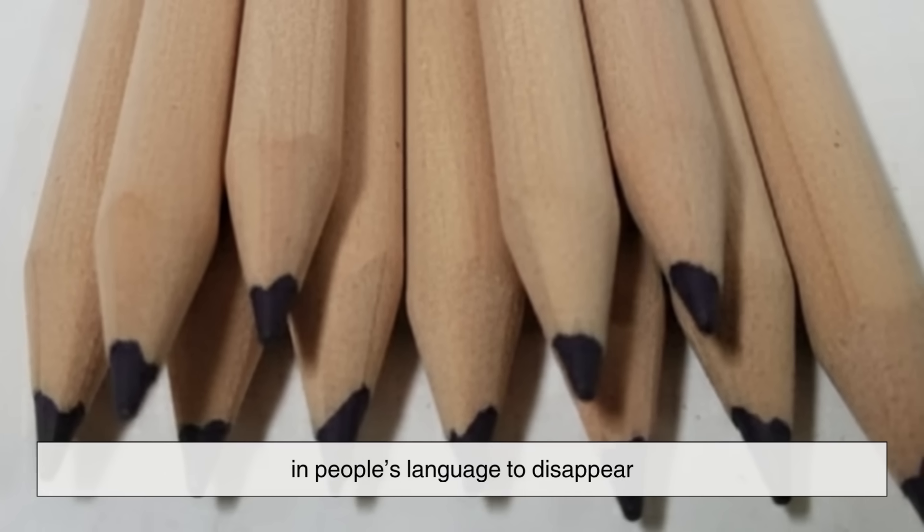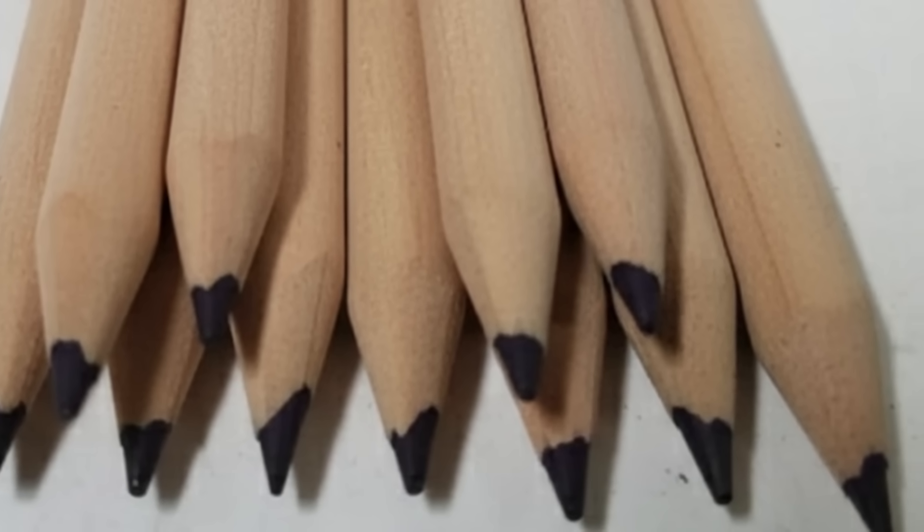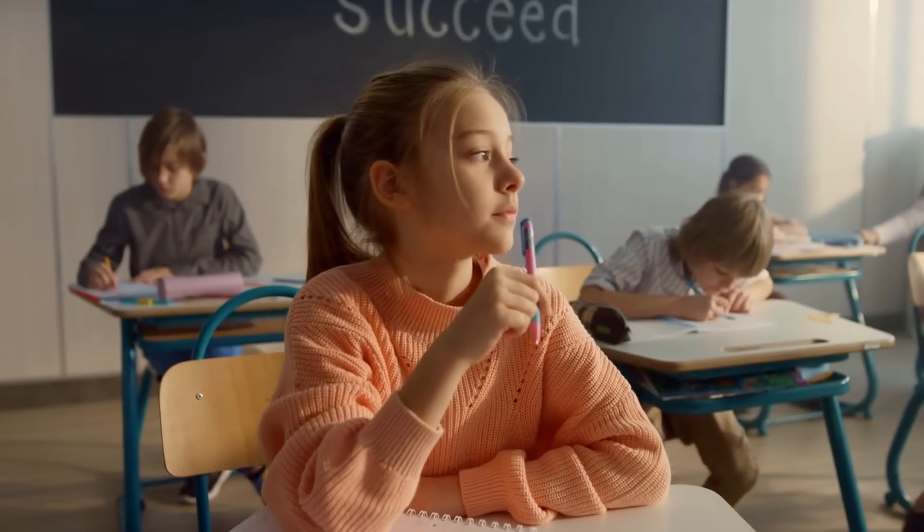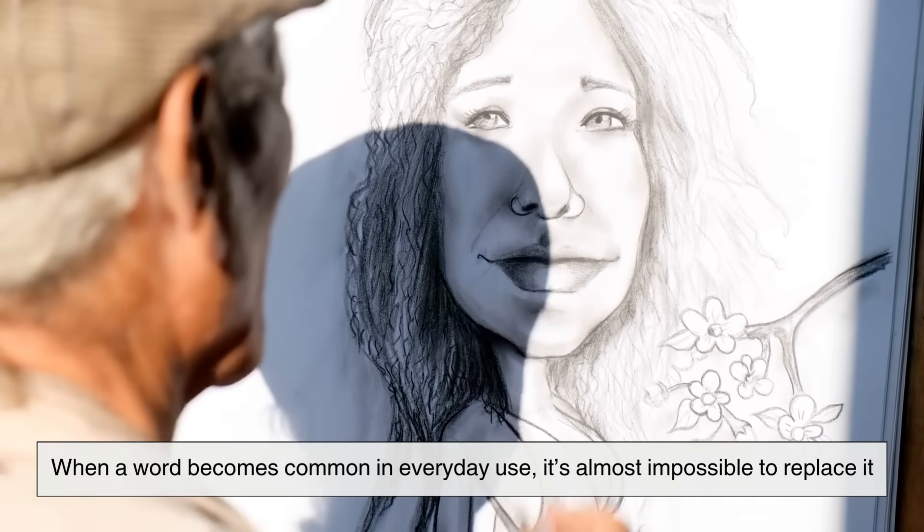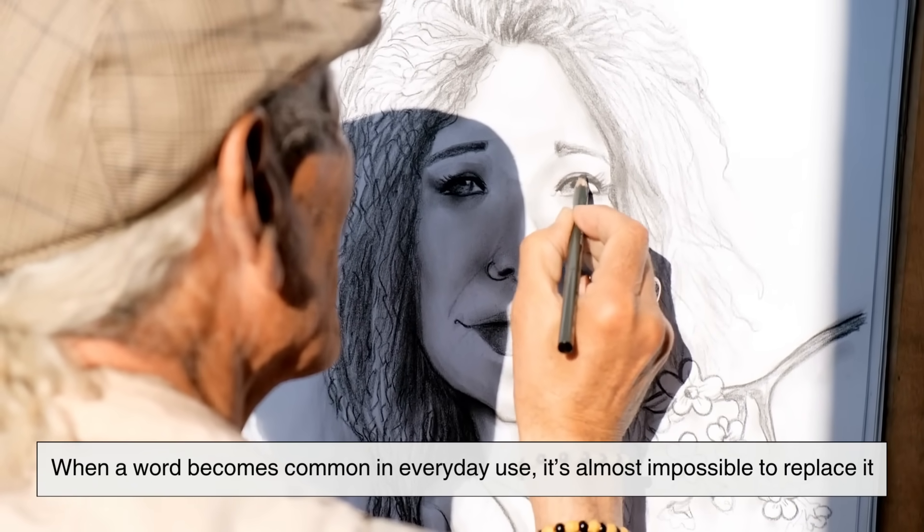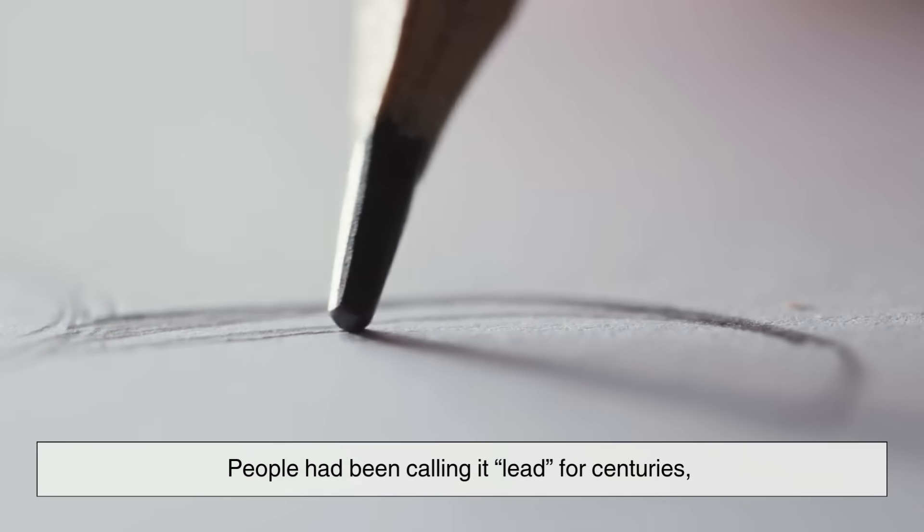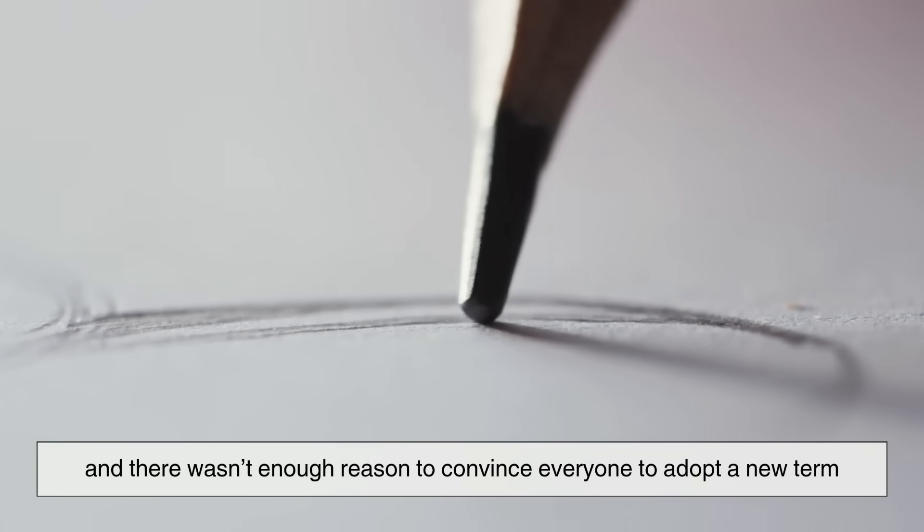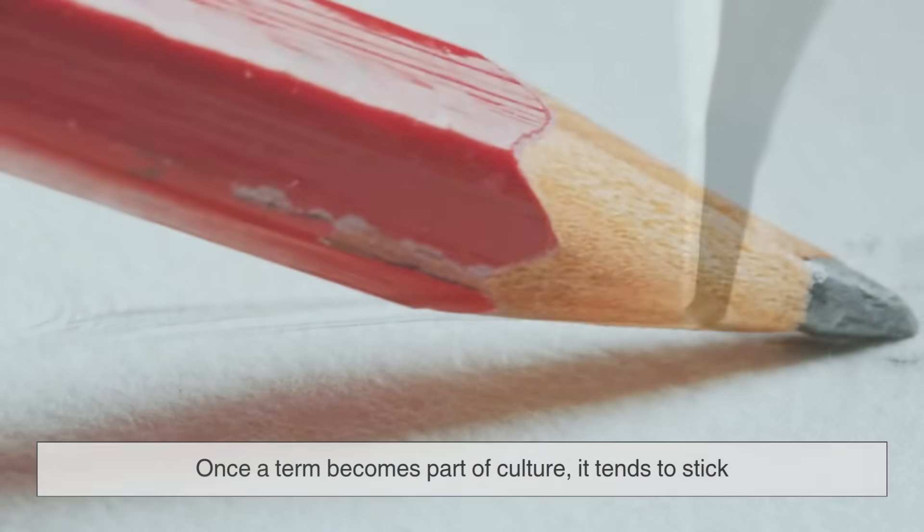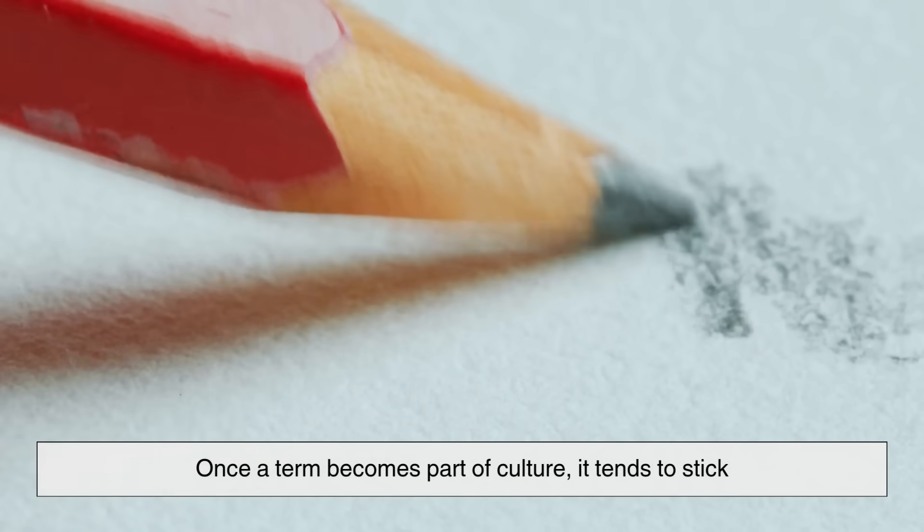Here's the big question: once scientists figured out it wasn't lead, why didn't the name change to something more accurate, like pencil graphite? The answer is surprisingly simple: language is stubborn. When a word becomes common in everyday use, it's almost impossible to replace it. People had been calling it lead for centuries, and there wasn't enough reason to convince everyone to adopt a new term. Once a term becomes part of culture, it tends to stick.